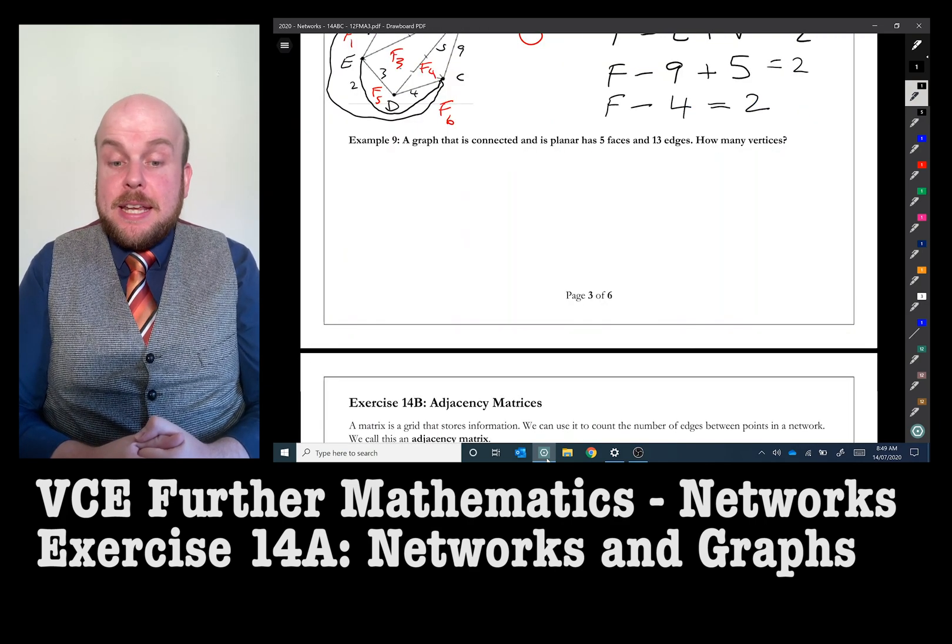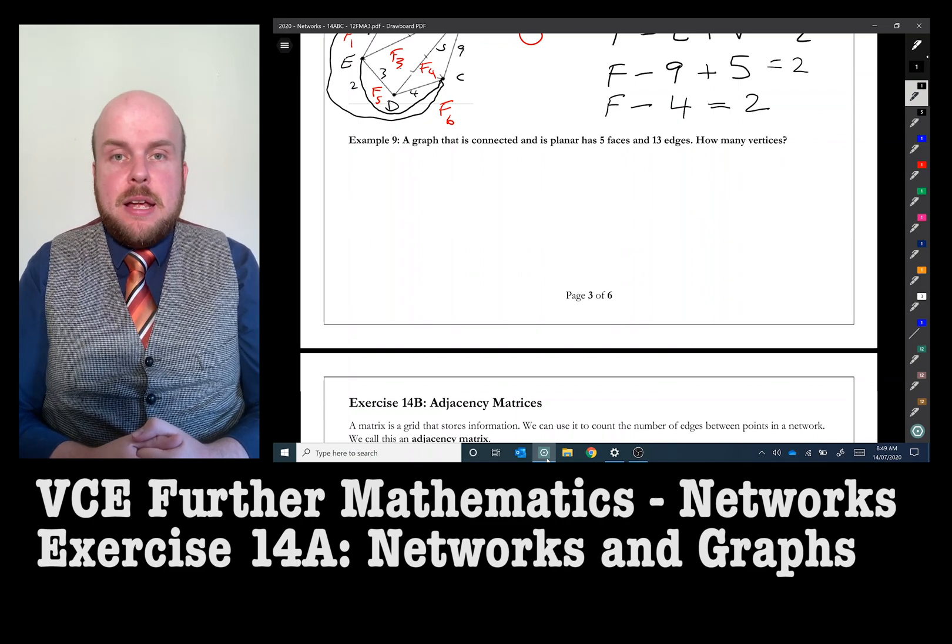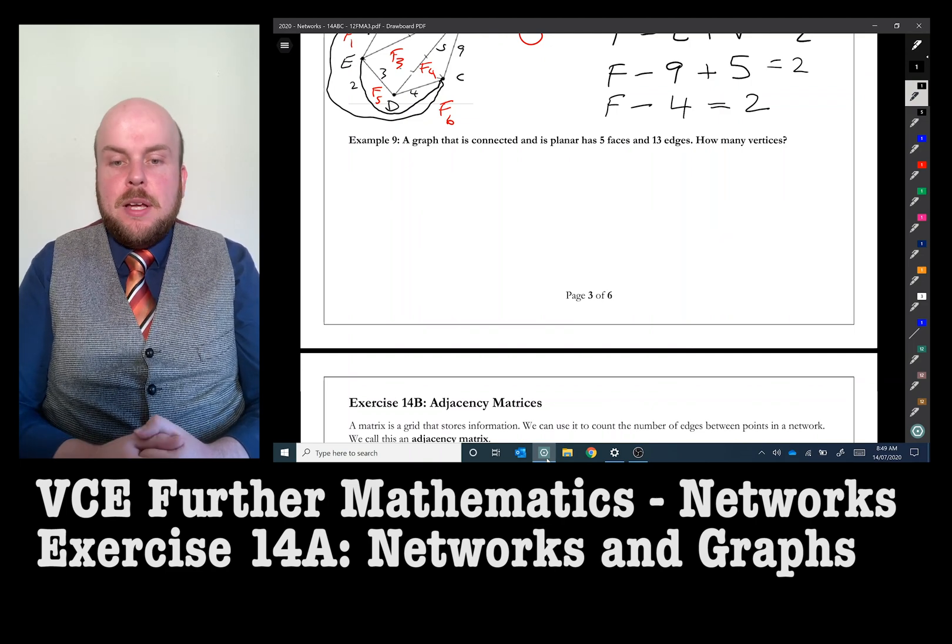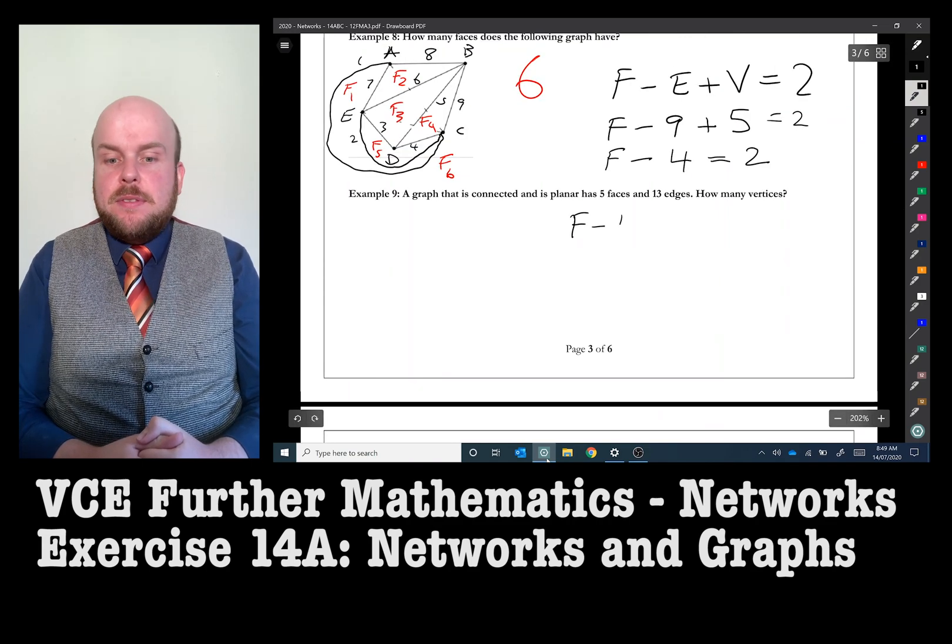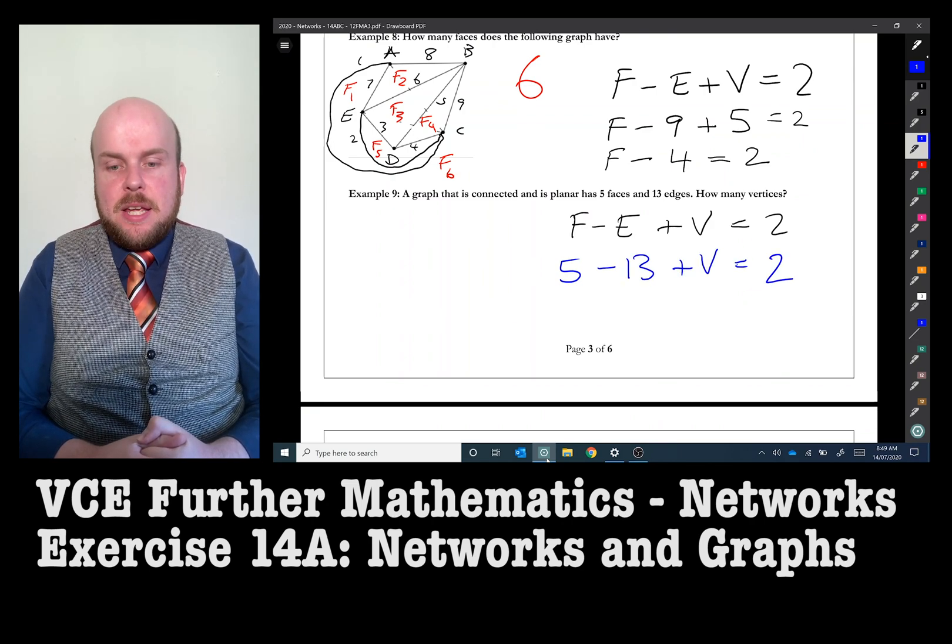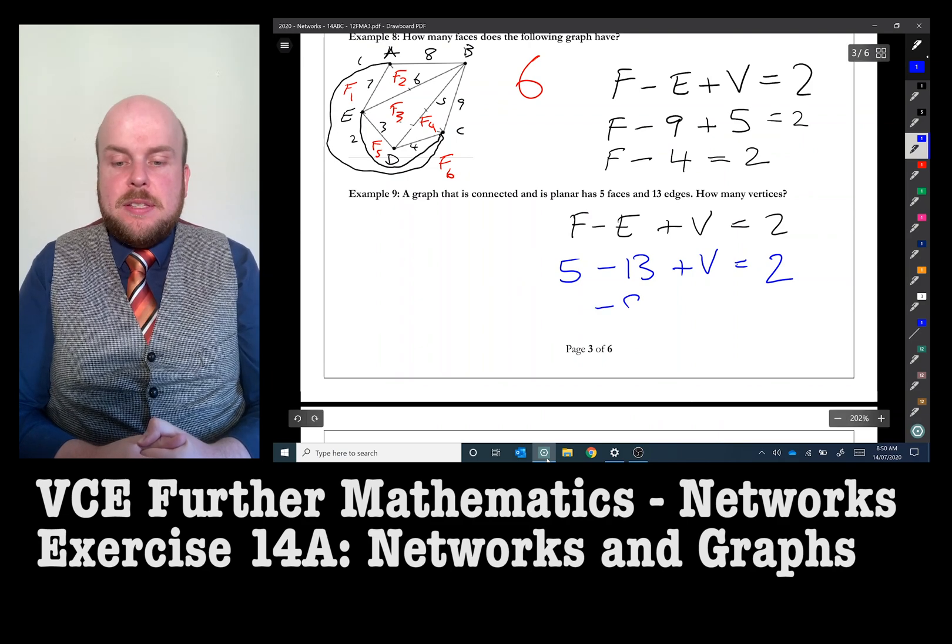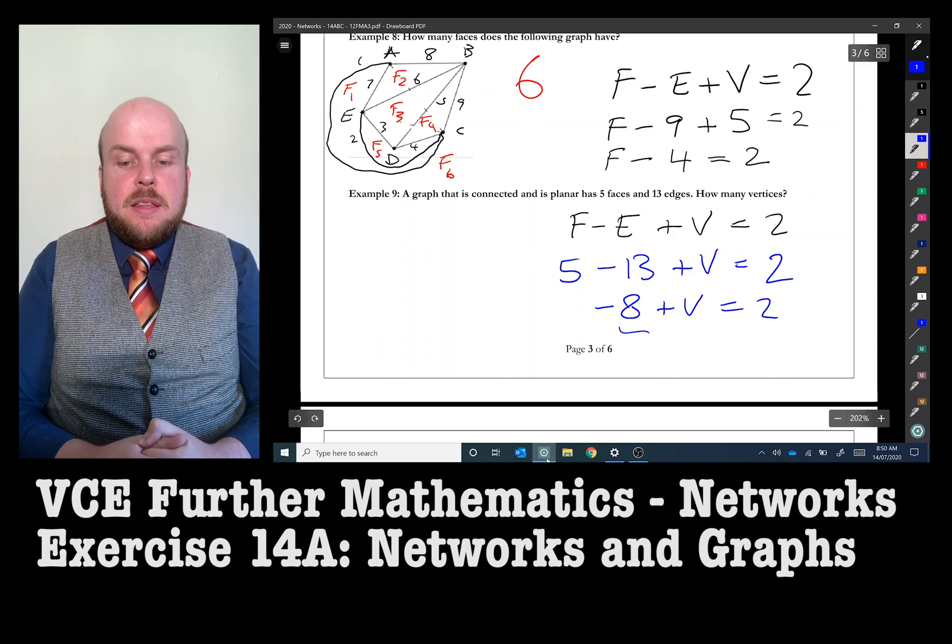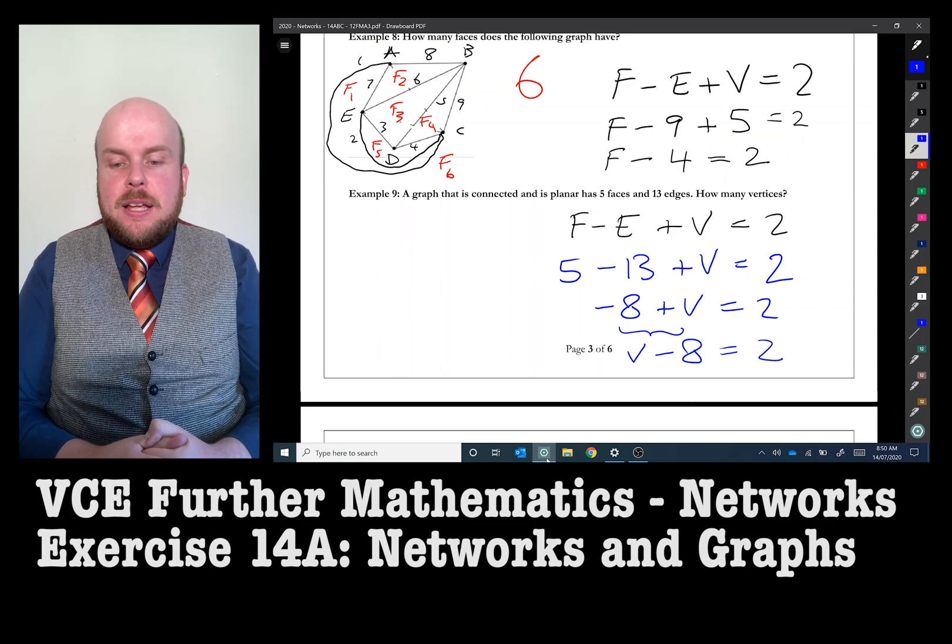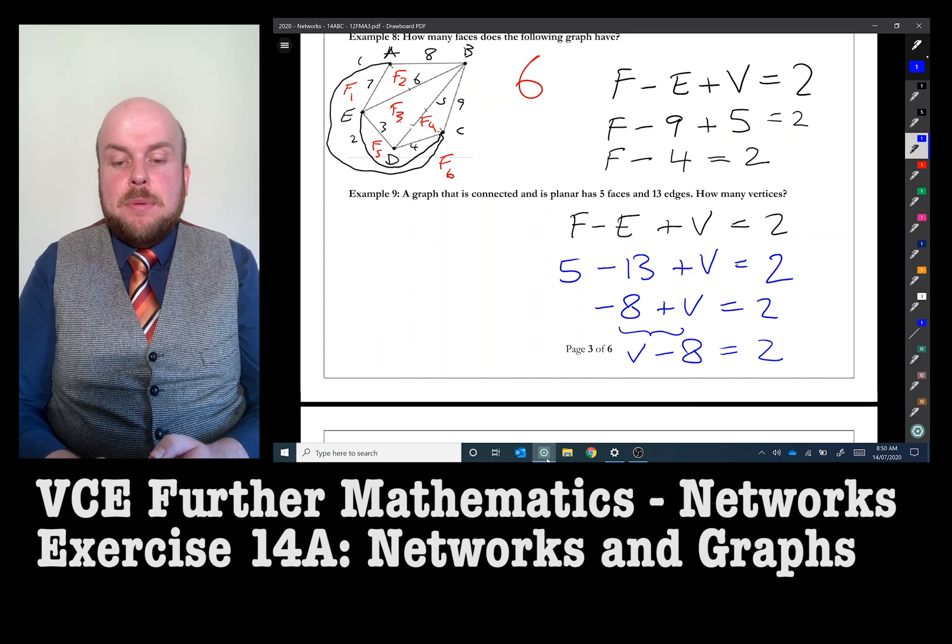With example 9, a graph that is connected at its planar has 5 faces and 13 edges. How many vertices? You could draw out a network using grids and boxes, but this would be better solved using Euler's rule. So I would write faces take away edges plus vertices is equal to 2. There are 5 faces take away 13 edges plus some unknown number of vertices equals 2. 5 take away 13 is equal to negative 8 plus some vertices equals 2. And then I just need to rewrite that sentence. Instead of saying negative 8 plus V, I could just write V take away 8 equals 2. So some number take away 8 equals 2. So that number has to be 10. So the number of vertices would be equal to 10.